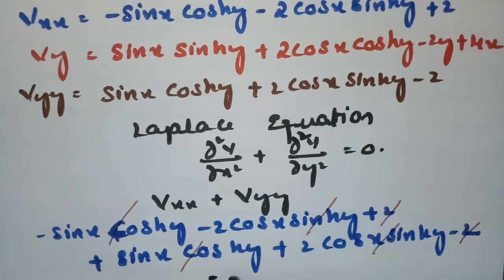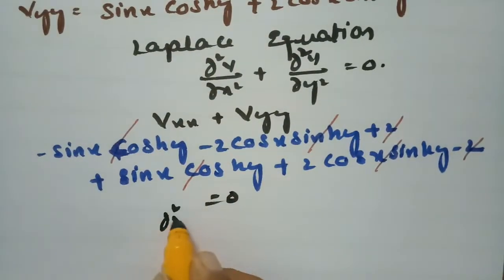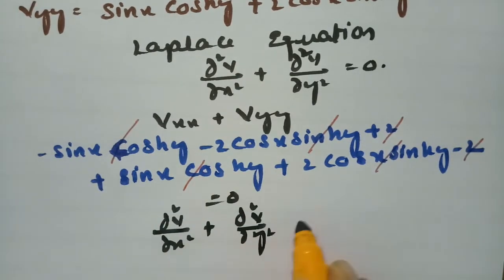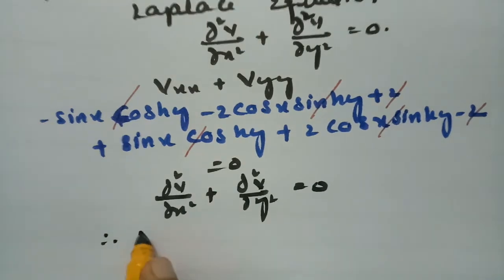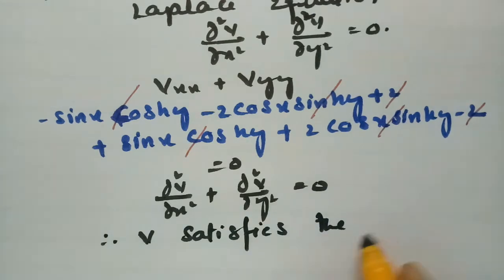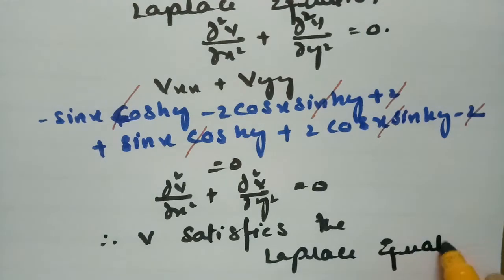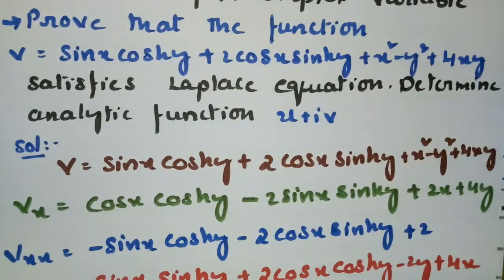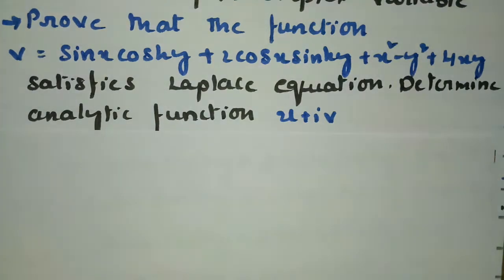All the values cancel and the result is 0. Therefore d squared v by dx squared plus d squared v by dy squared equals zero, and therefore v satisfies the Laplace equation. Now it is also asked to determine the analytic function. For finding the analytic function I am using the Milne-Thomson method.